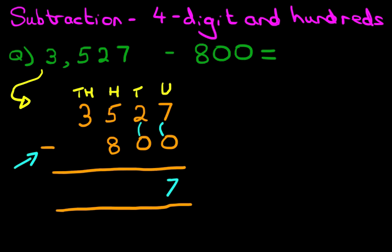Now the tens column. What is two minus zero? That's right. The answer is two. The hundreds column.